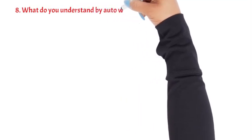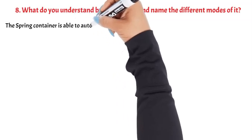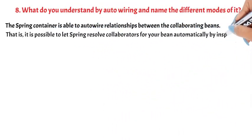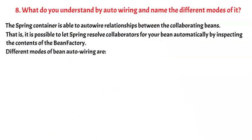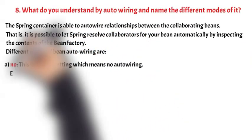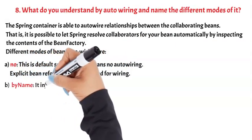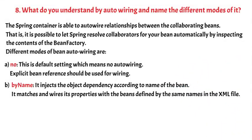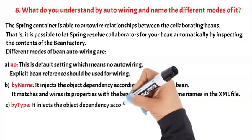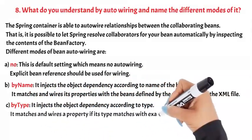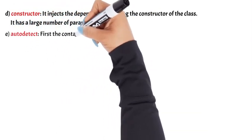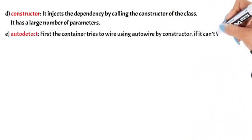Question 8: What do you understand by auto-wiring and name the different modes of it? The Spring container is able to auto-wire relationships between collaborating beans — that is, it is possible to let Spring resolve collaborators for your bean automatically by inspecting the contents of the bean factory. Different modes of bean auto-wiring are: A. No — this is the default setting which means no auto-wiring; explicit bean reference should be used for wiring. B. By name — injects the object dependency according to the name of the bean; it matches and wires its properties with the beans defined by the same names in the XML file. C. By type — injects the object dependency according to type; it matches and wires a property if its type matches with exactly one of the beans in the XML file. D. Constructor — injects the dependency by calling the constructor of the class; it has a large number of parameters. E. Auto-detect — first the container tries to wire using auto-wire by constructor; if it can't, then it tries to auto-wire by type.